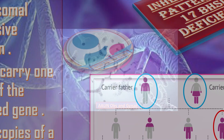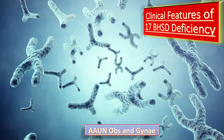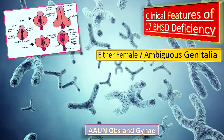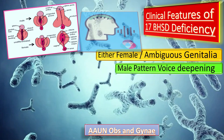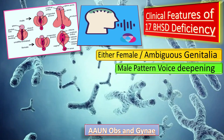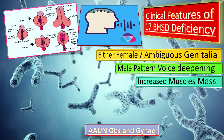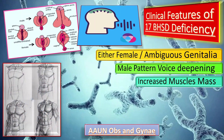These patients present with female or ambiguous genitalia because they have low testosterone despite having a 46XY karyotype. Due to testosterone deficiency, they develop either female or ambiguous genitalia. A second clinical feature is male-pattern deepening of the voice, since the karyotype is that of a male. These individuals also have increased muscle mass, but breast development is present as well.